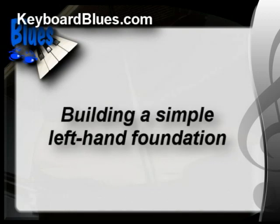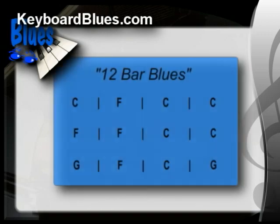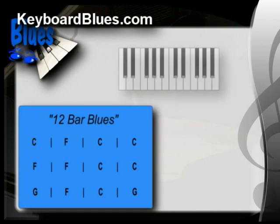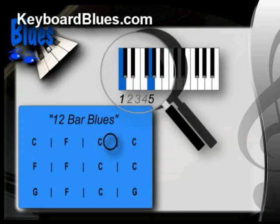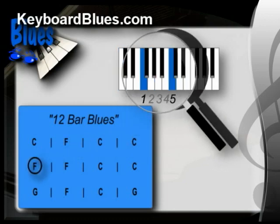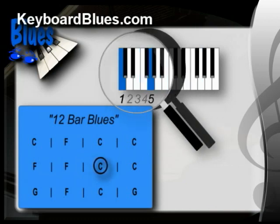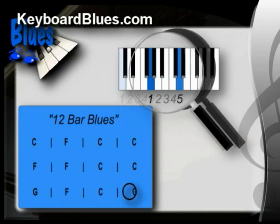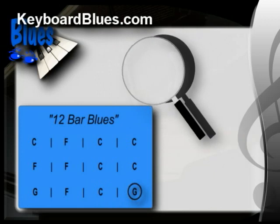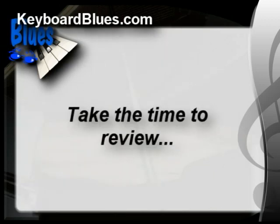Now that you know what fifths are, let's use them to build a simple foundation in the blues. Look at the 12-bar blues diagram again. For each chord, I'm going to play a fifth built on that chord and hold it for four beats. The progression moves through C, F, C, C on the first line; F, F, C, C on the second line; and G, F, C, G on the last line. Now we're just at the foundational stages, but don't be afraid to review that as many times as you need to get it really solid, and then move on.